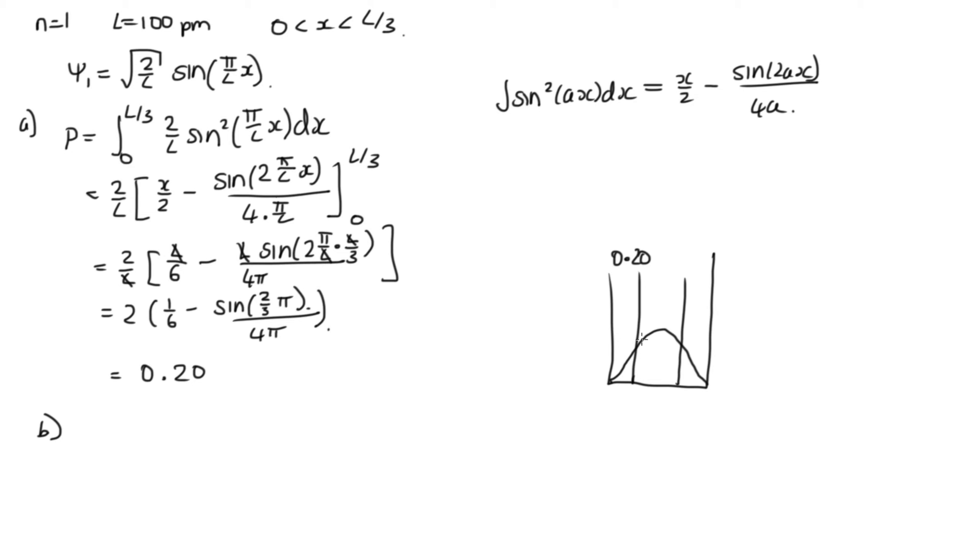Now to make this easy, the other thing we know is that this is completely symmetric. So if there's a 0.2 chance that it's in this part of the well, then symmetrically there's a 0.20 probability that it's in the right 1 third of the well as well. But we know that the total probability that it's in the well is 1, because it's definitely in the well. So 1 is equal to the probability from 0 less than x less than L over 3, plus the probability from L over 3 to 2L over 3, plus the probability from 2L over 3 to L. And we know that this one's 0.20, and by symmetry this one's 0.20 as well, and this is what we're trying to find.